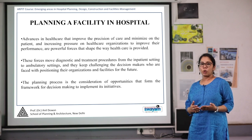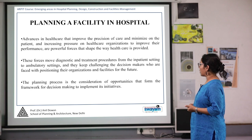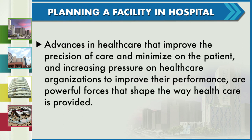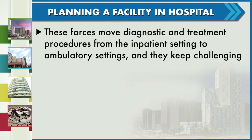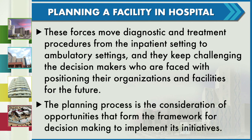How to plan a facility in a hospital: it starts with looking at the size of facility needed for a community, depending on census recordings for a particular state or community. Ever since advancements in technology, healthcare has improved precision of care and minimized effects on patients. This has pressured healthcare organizations to provide facilities in a way that forces the shape of a healthcare institute — moving diagnostic and treatment procedures from inpatient settings to ambulatory settings. These forces keep challenging decision makers who must position their organizations and facilities for the future.